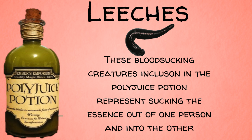Our next ingredient is Leeches. These blood-sucking creatures' inclusion in the Polyjuice Potion represents sucking the essence out of one person and into the other.